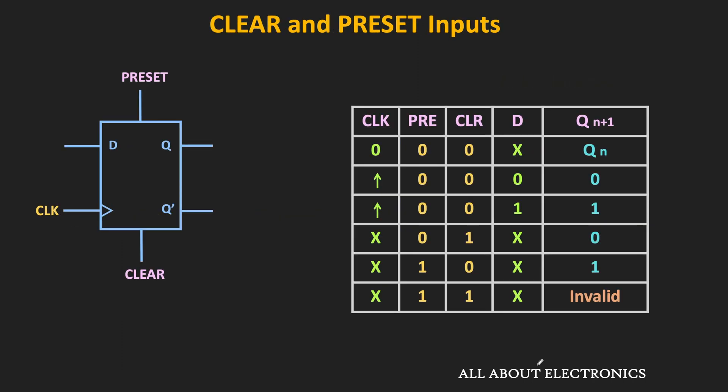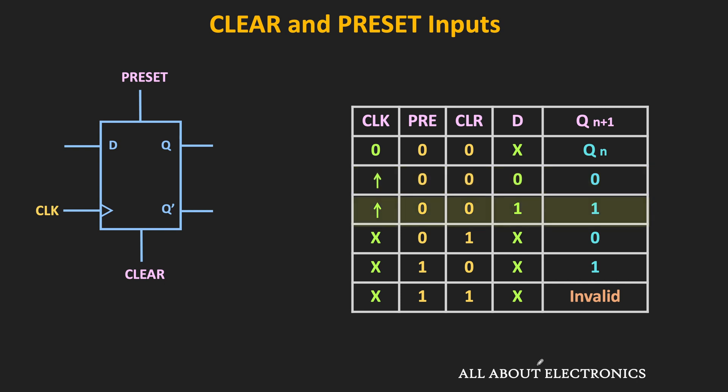Taking the example of the D flip-flop, let us see how the flip-flop behaves for different input combinations of preset and clear. When both preset and clear inputs are low, the output of the flip-flop will be controlled by the synchronous inputs. In the first case, when the clock signal is also low, then irrespective of the D input, the flip-flop will retain its current state. But whenever the clock is available, at the clock edge, the flip-flop will respond to the synchronous input. If the D input is low, the output will also become low, and when the D input is high, the output will also become high.